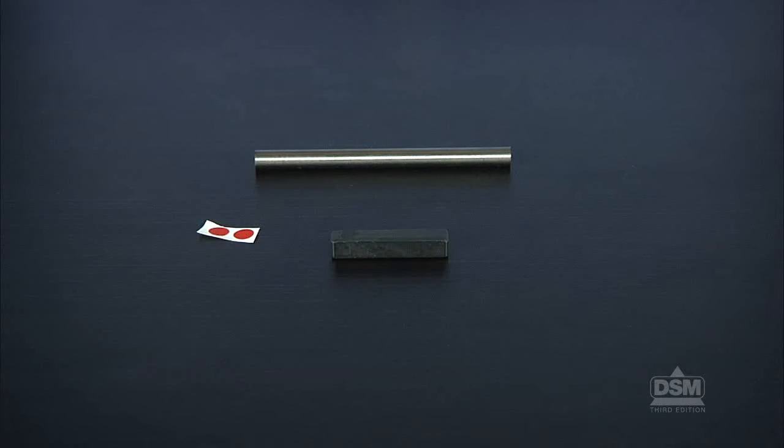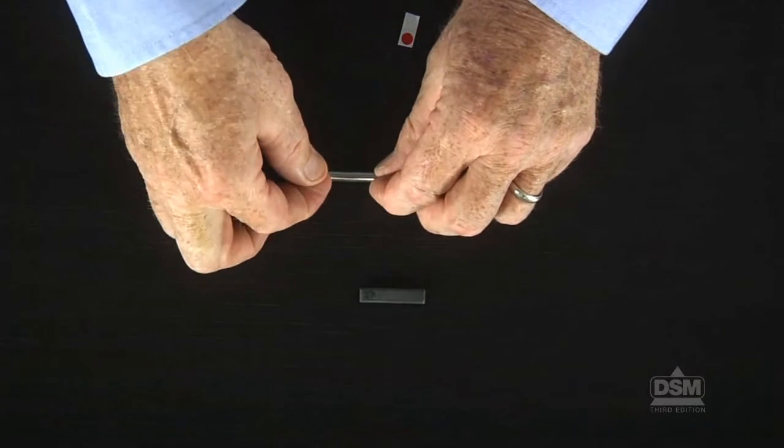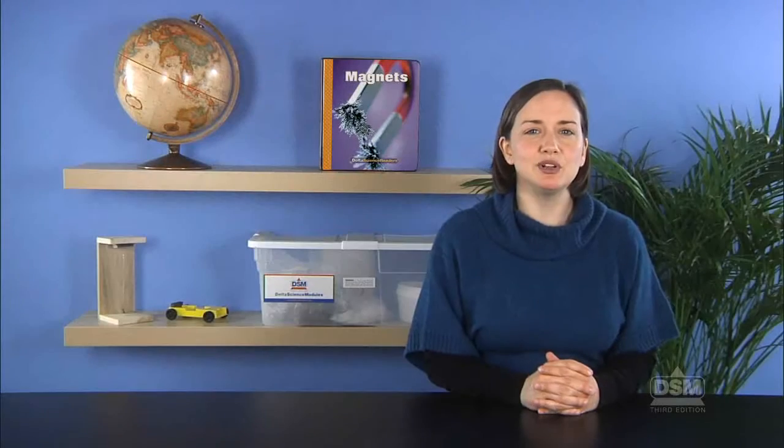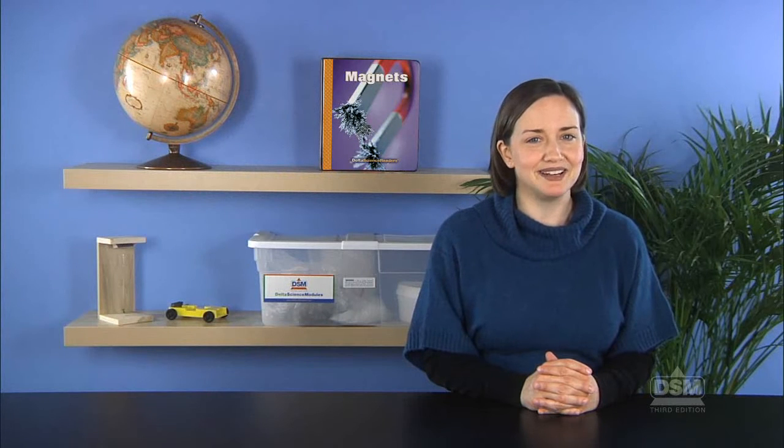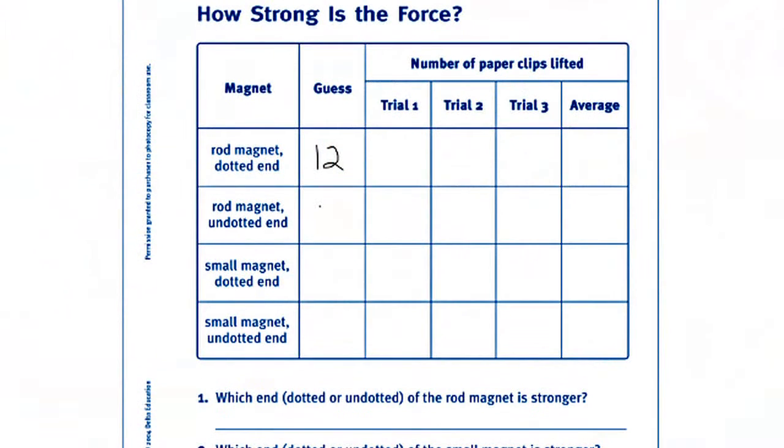Distribute copies of Activity Sheet 3 Parts A and B and a rod magnet, a small magnet, and two dots to each team. Ask students to put a colored dot on one end of each magnet and guess how many paperclips they think each end of each magnet can lift.